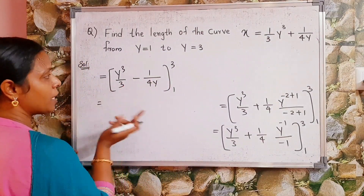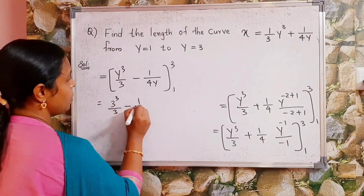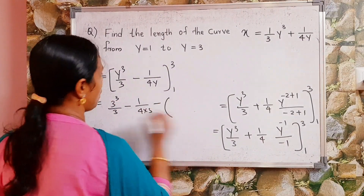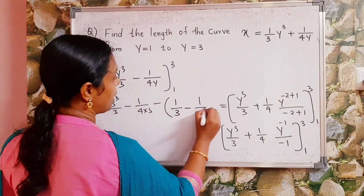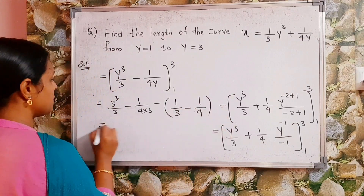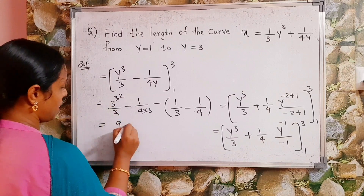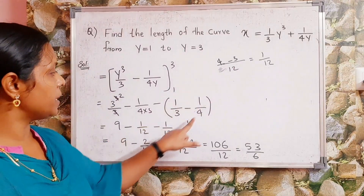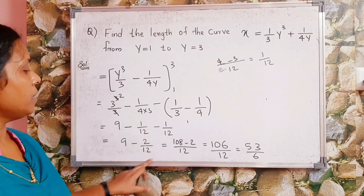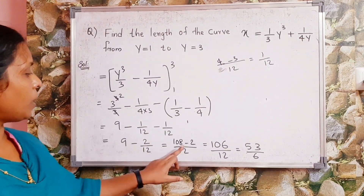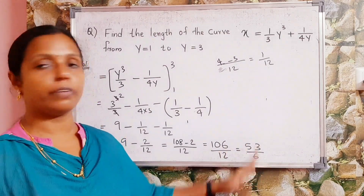Calculating: (108 − 2)/12 = 106/12 = 53/6. The length of the given curve is 53/6.